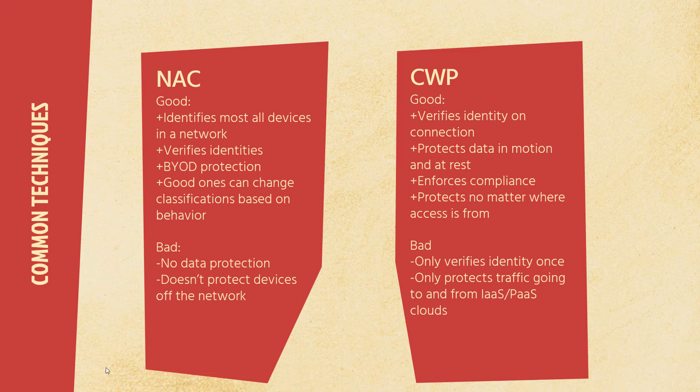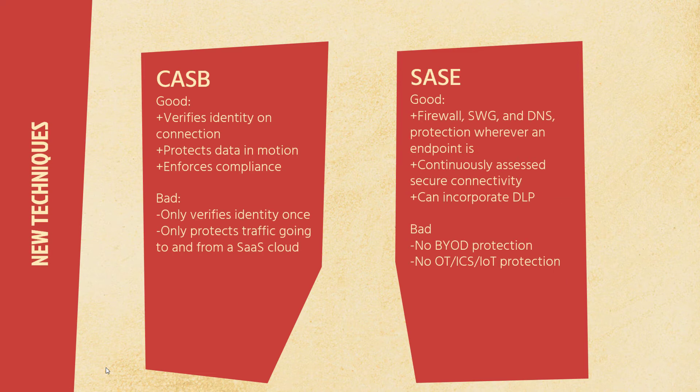The same way CWP protects your PaaS and IaaS, we need to talk about CASB to protect your SaaS. Cloud Access Security Broker — these days almost nothing is just a CASB anymore; they also include cloud posture assessments, data protection, and that kind of thing. The good news: it verifies identity on connection, protects data in motion, enforces compliance, and can even enforce data loss protection to and from SaaS. The bad side is it only verifies identity once and only protects traffic to and from a SaaS cloud. It's a very important but still single edge.